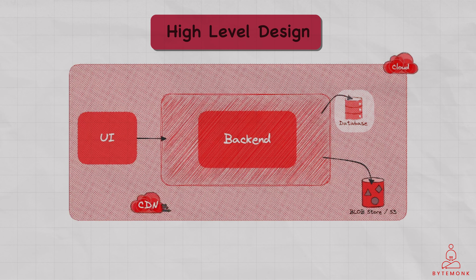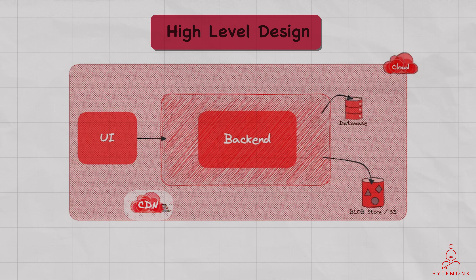The videos will be stored in a distributed file system such as Google Cloud Storage, Amazon S3, or Azure Blob Storage. The videos will be encrypted for security and compressed for efficient streaming. We'll also have a content delivery network. The CDN will be used to deliver video content to the user and will also cache the video content to provide fast and efficient streaming. This can be a CDN like Amazon CloudFront or Akamai.